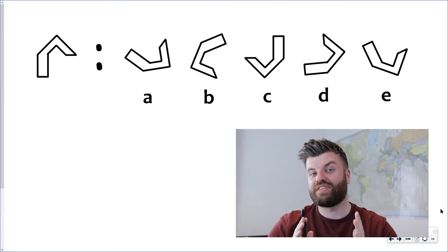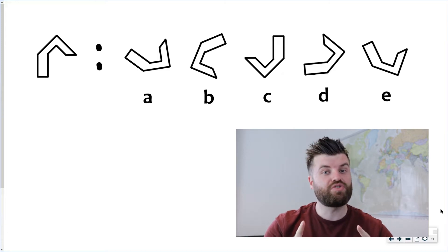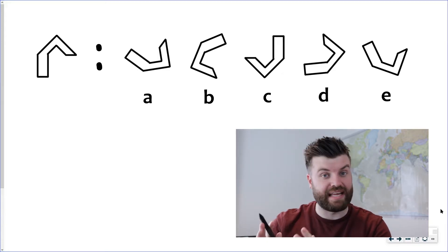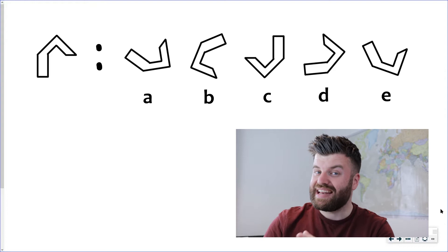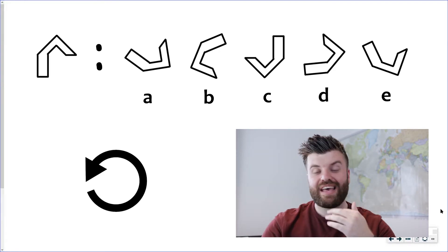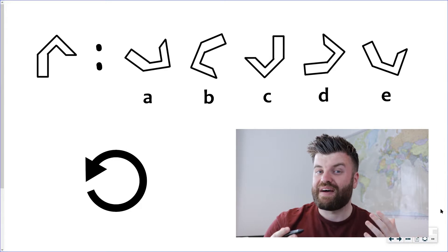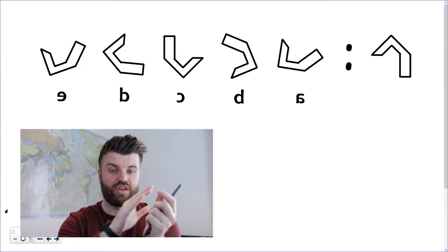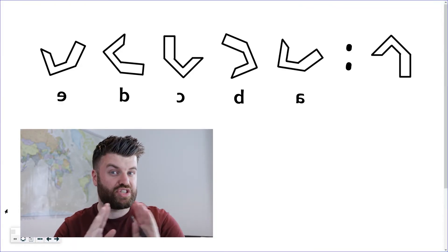In this question type you're given a shape on the left and it's your job to find a shape that matches it out of the five on the right. Now the only thing that's happened to that shape is that it's been rotated. The other four shapes have actually been flipped so you need to avoid the mirrored shapes.